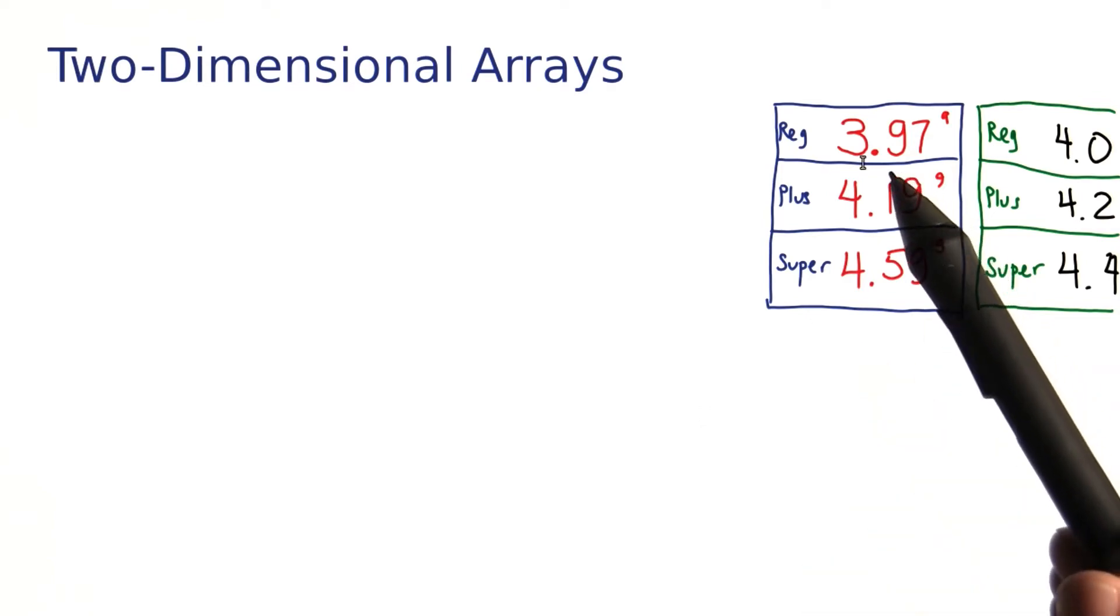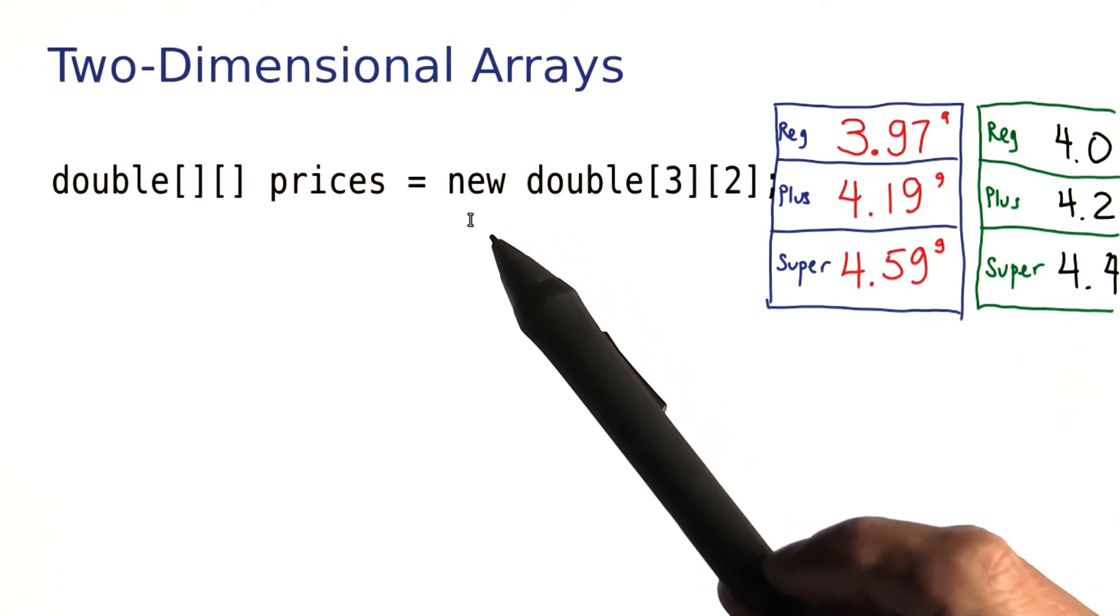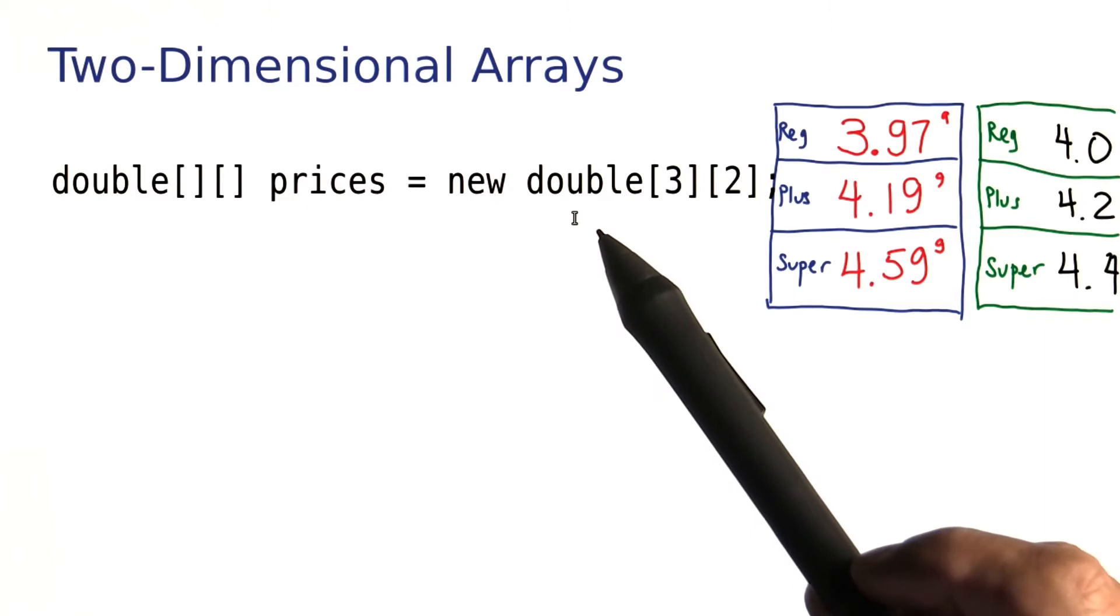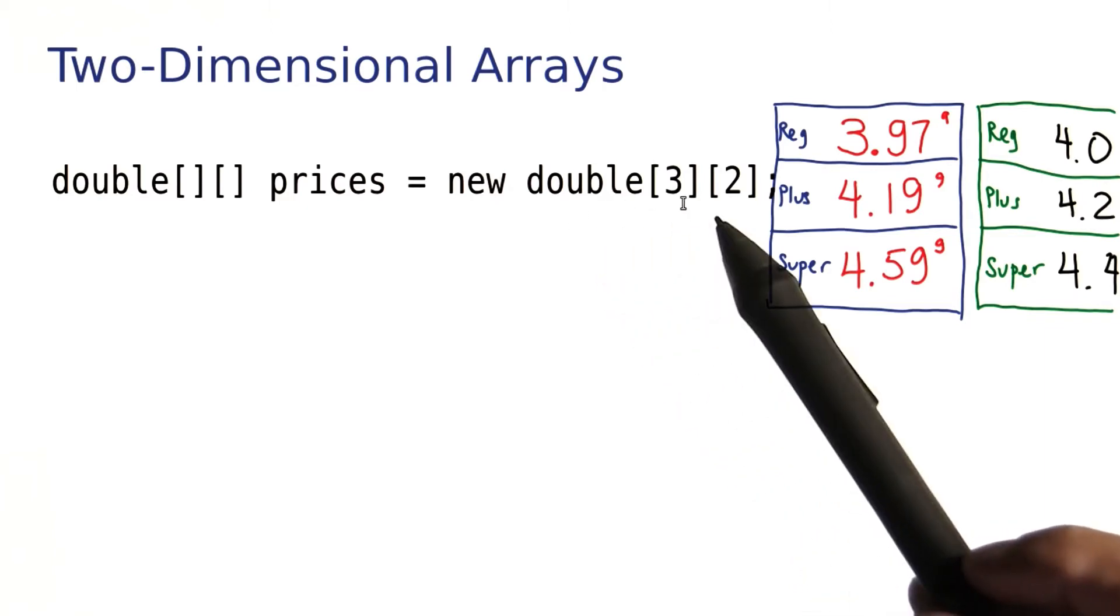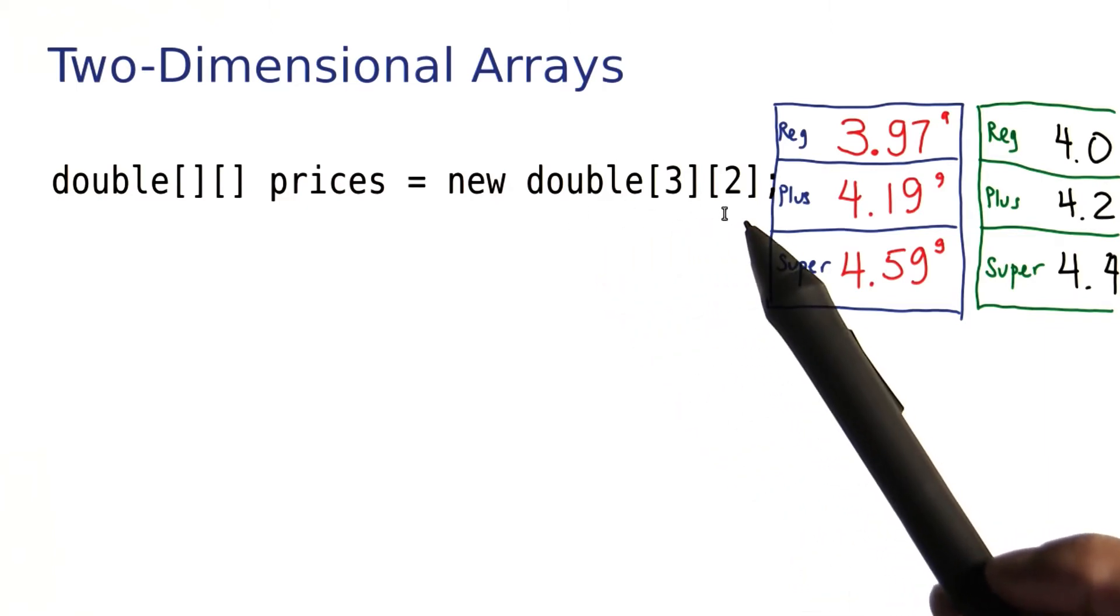In this example, we would have three rows and two columns. In Java, we get such an arrangement by saying, give me a new array of doubles, of floating point numbers. And I want three rows, two columns.